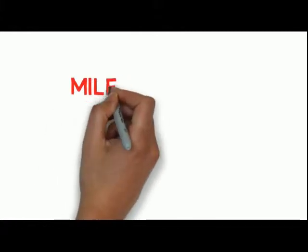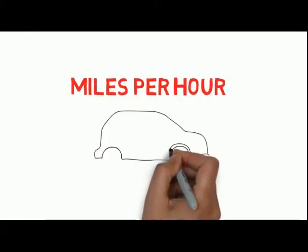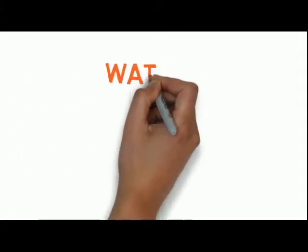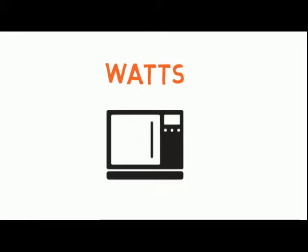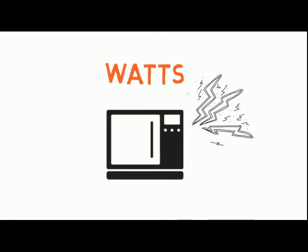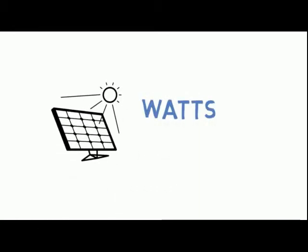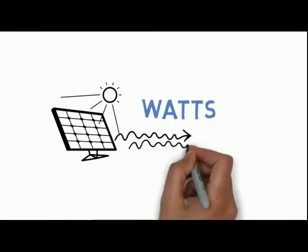Much like gallons per hour is how fast water is flowing, or miles per hour is how fast your car is moving, watts is how fast you are using or generating electricity. A solar panel will be rated in watts for how fast it is capable of producing power.